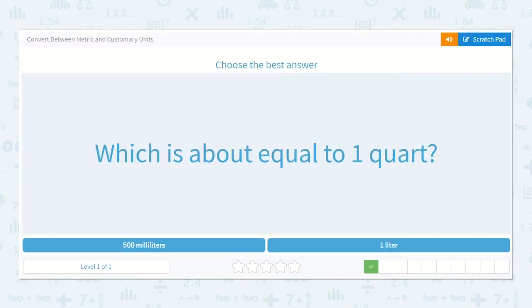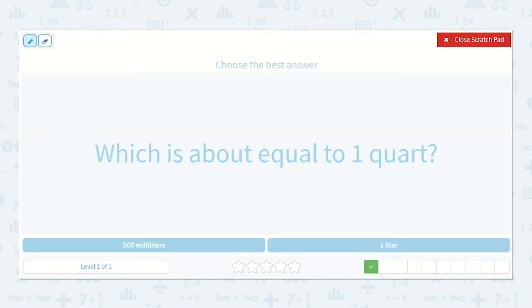Which is about equal to one quart? Well, I know that one quart is about one quarter of a gallon. And that one liter is almost one quarter of a gallon.